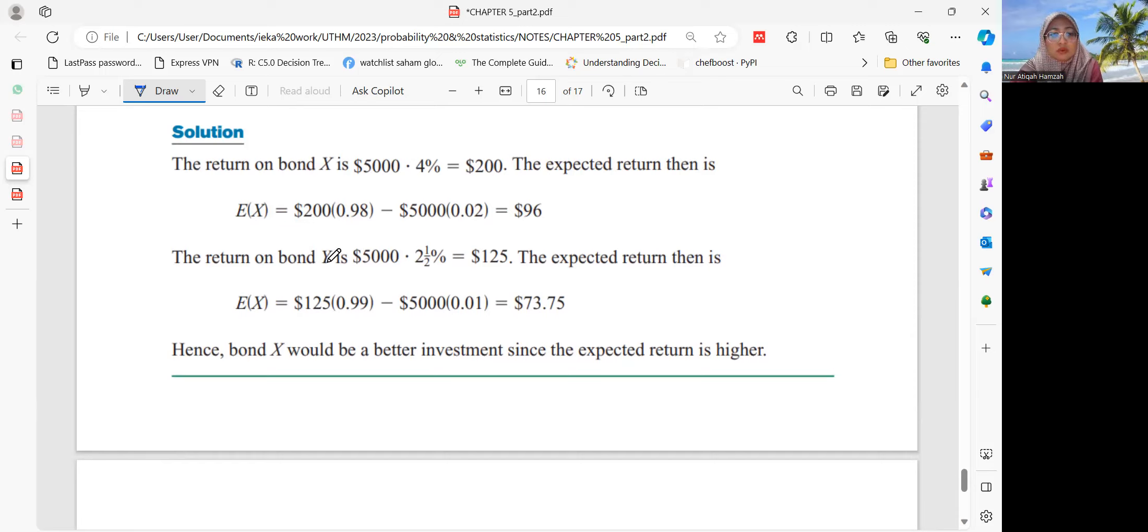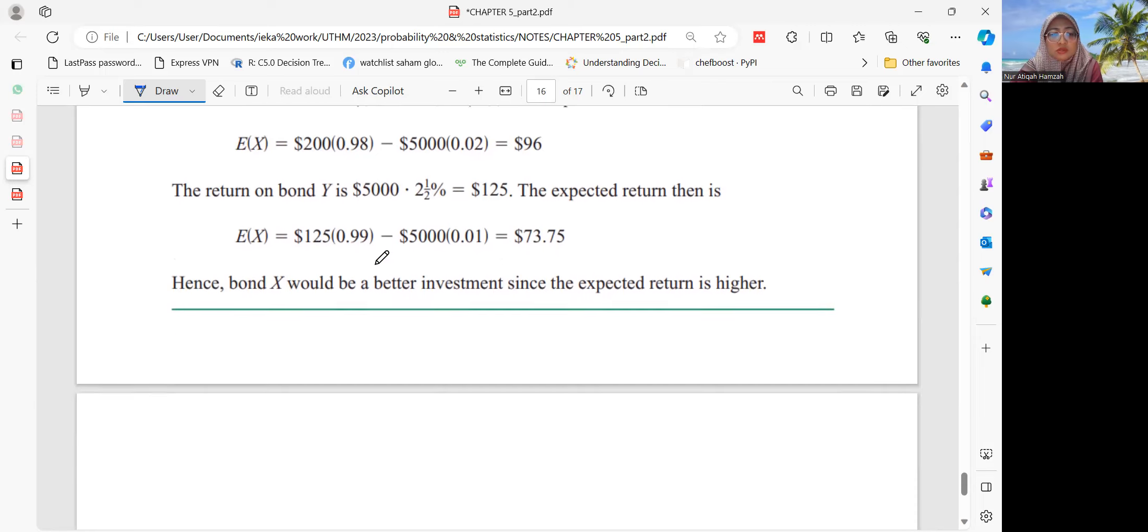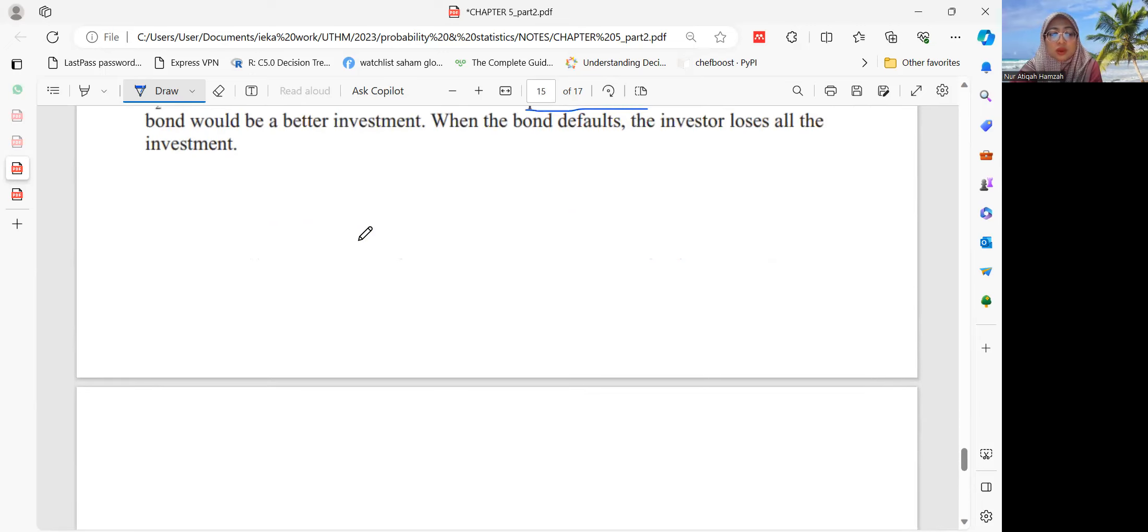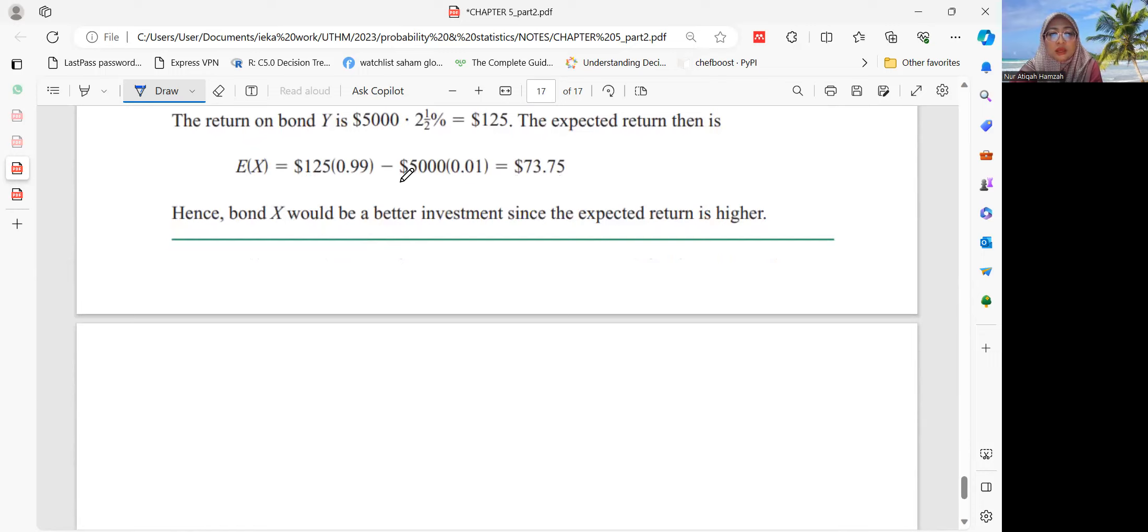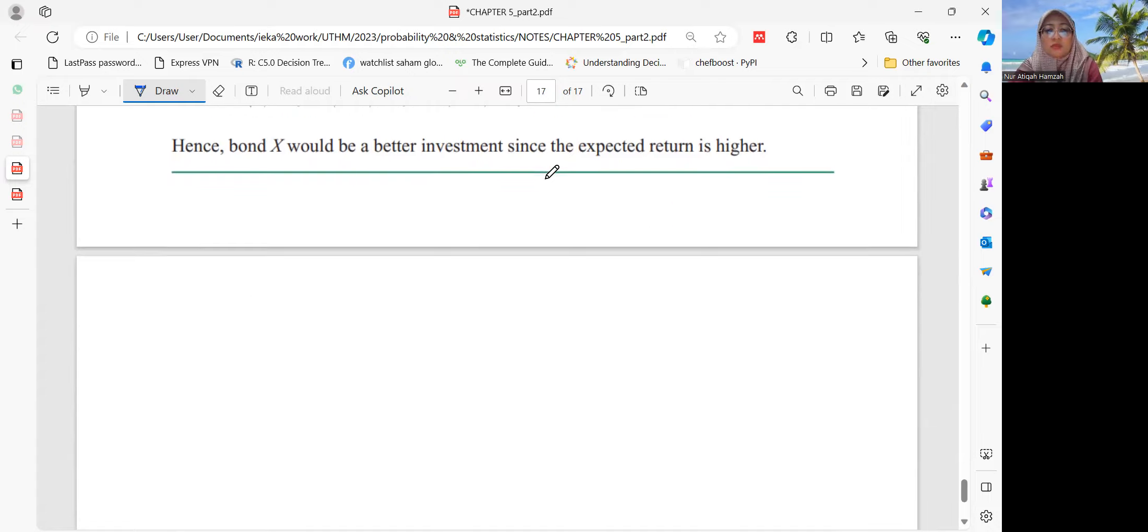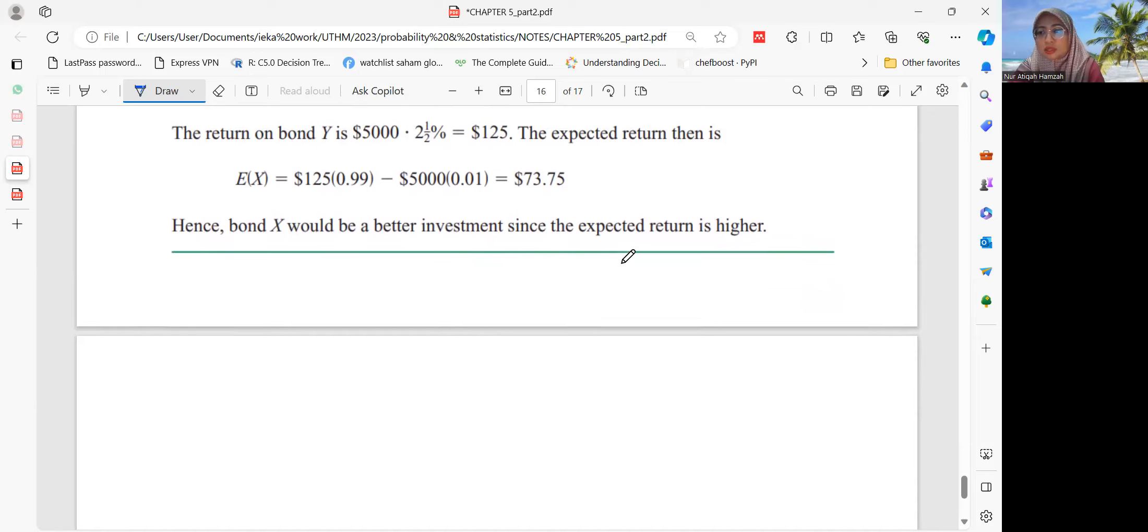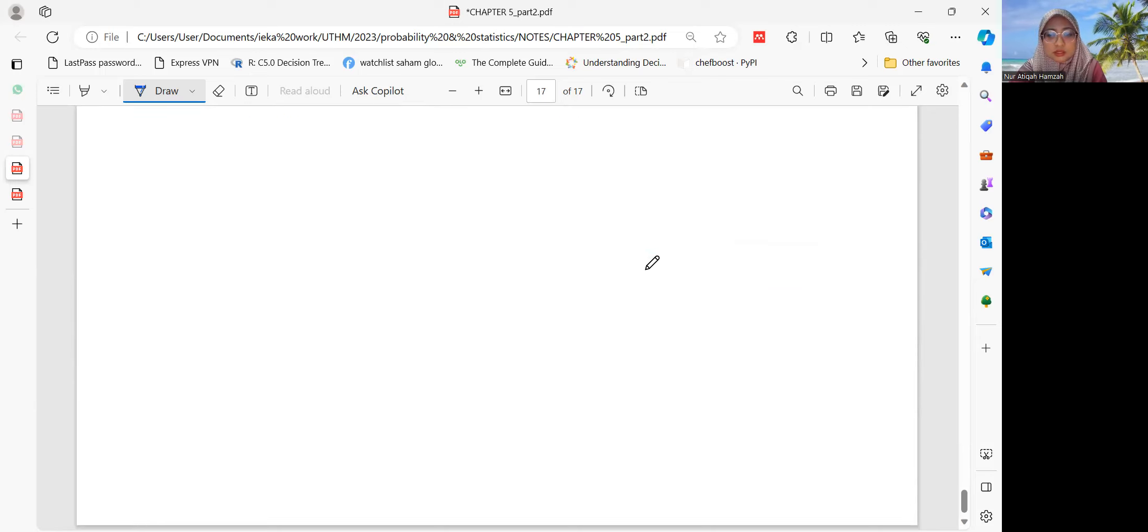Why does this happen? Because it has a default rate of 2%. That means from 100%, 2% is the default rate, so they get 98%. For bond Y, $5,000 times 2%, with probability 0.99. And then $5,000 times 1% here. So we get $98.75. The bond X will be a better investment since the expected return is higher.